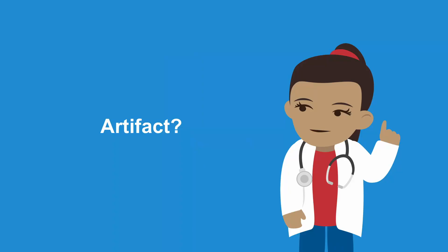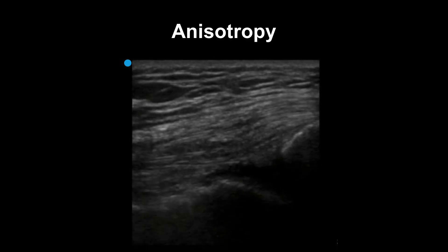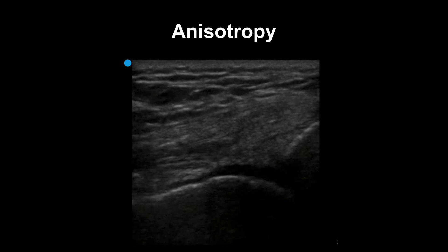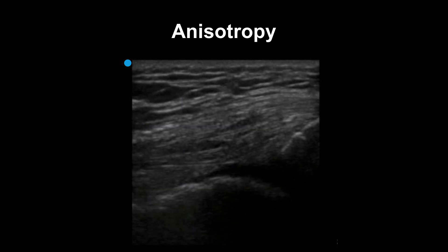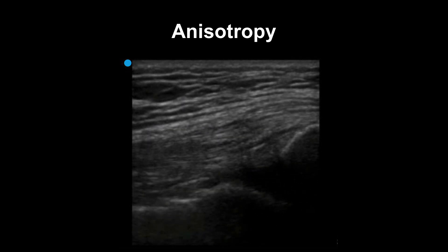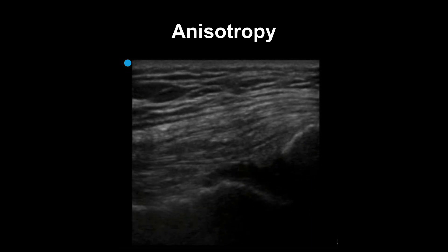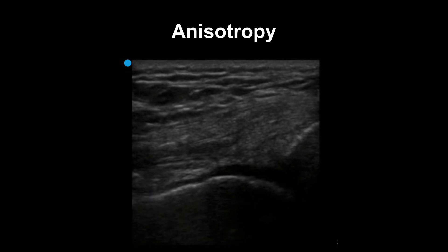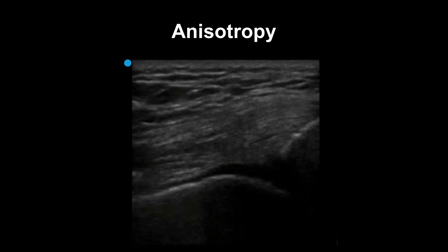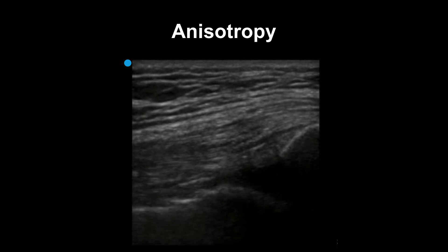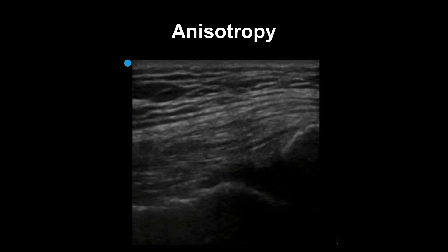There is one main artifact to know of when scanning the knee: anisotropy. This is the large quadricep tendon demonstrating the concept of anisotropy. You can see that as the operator scans through the tendon, it tends to look more dark when the probe is off axis, and then the fibers appear bright again when the probe is directly on axis.